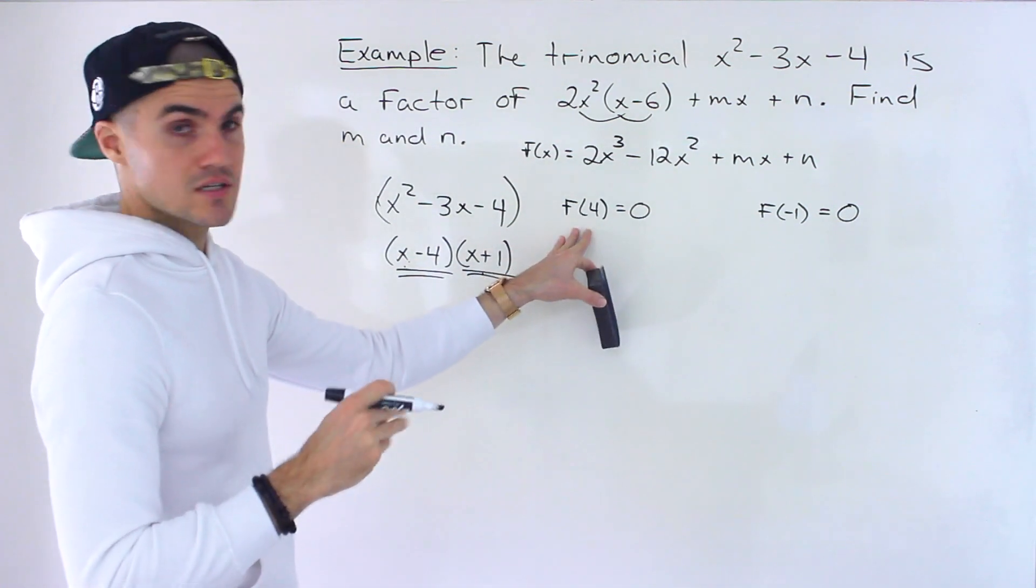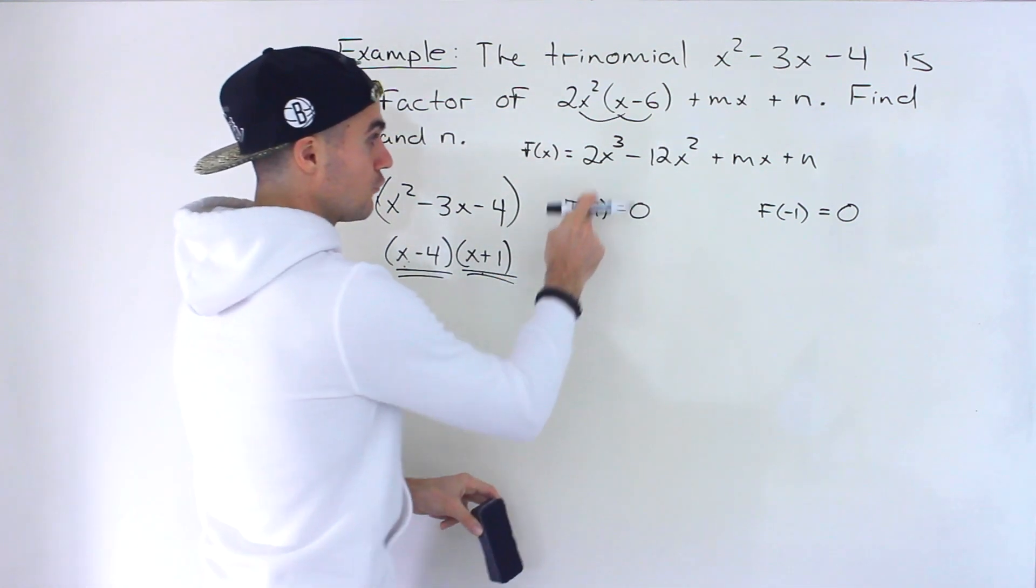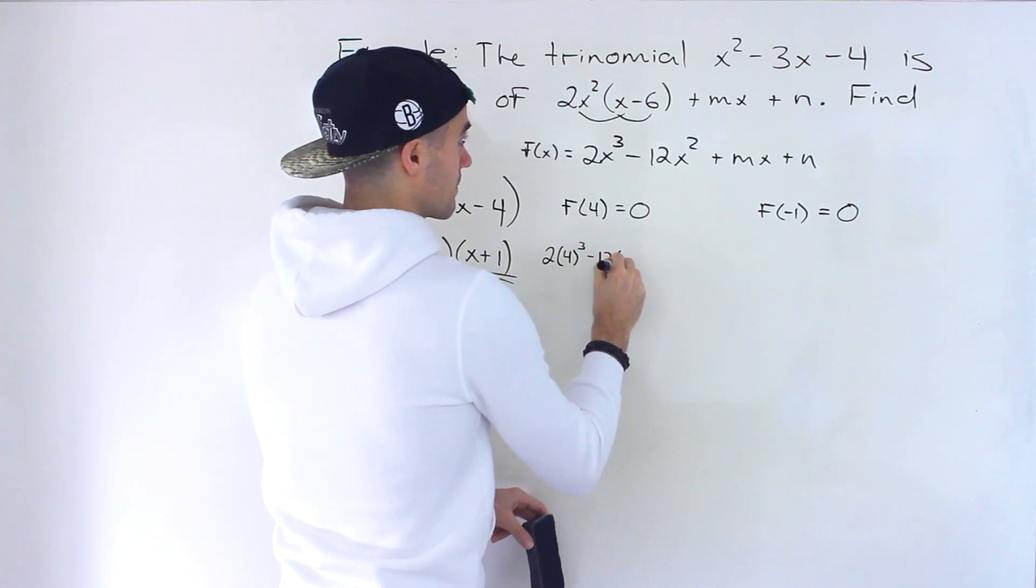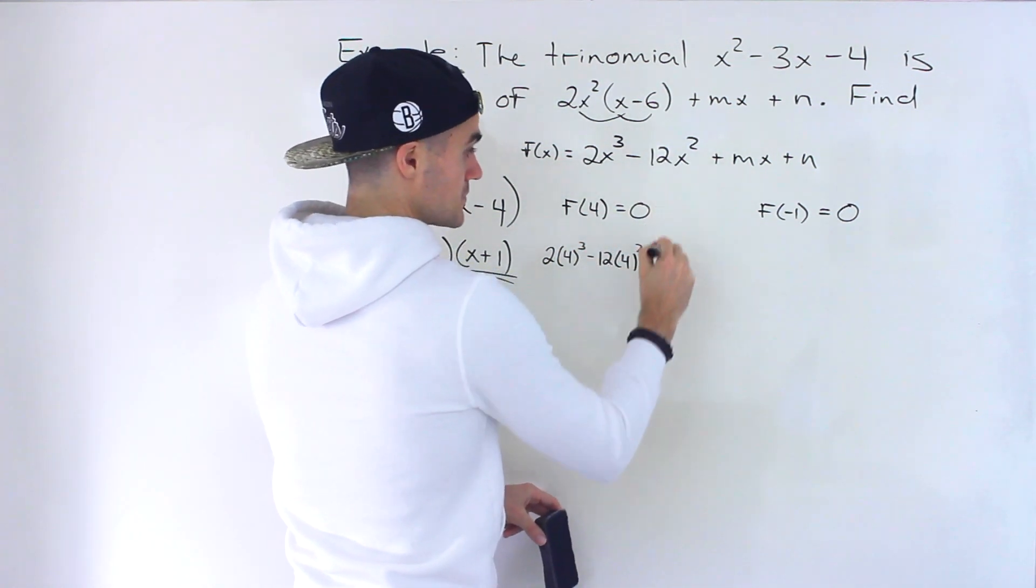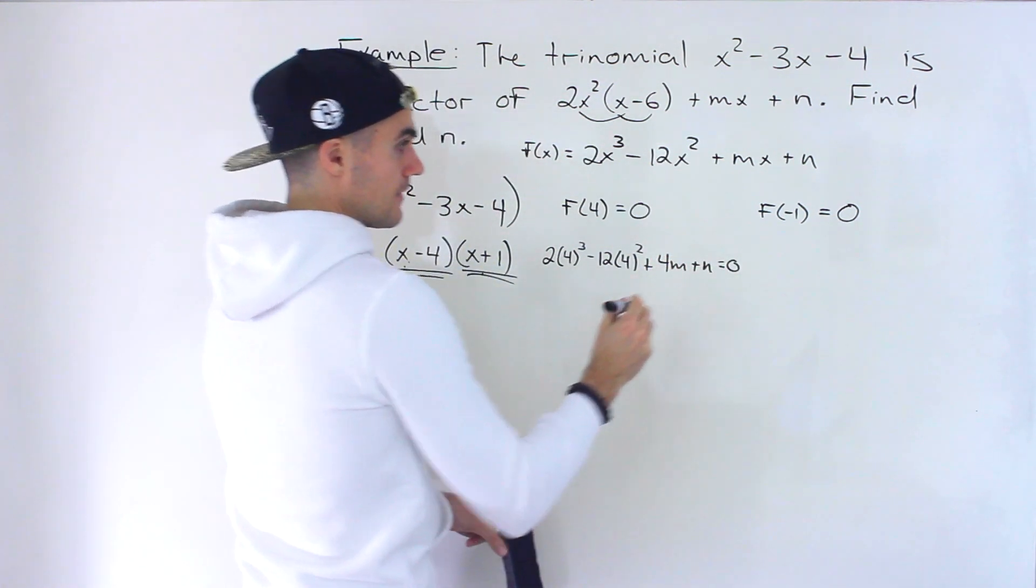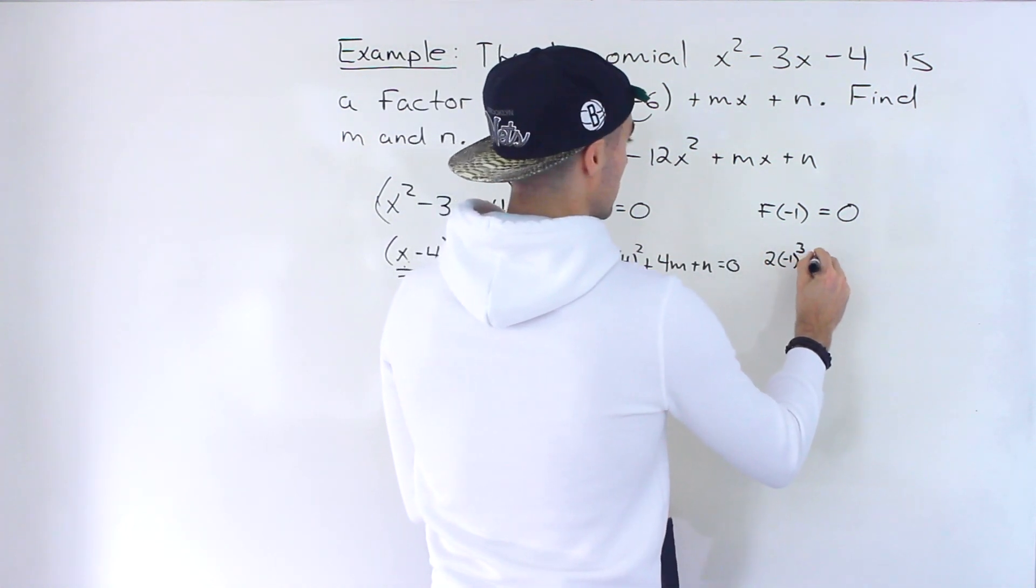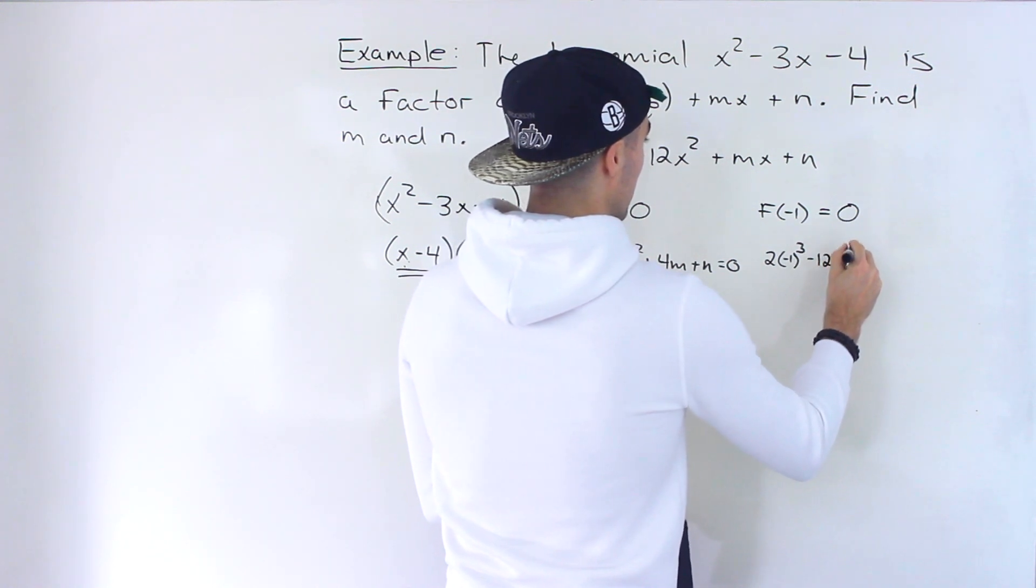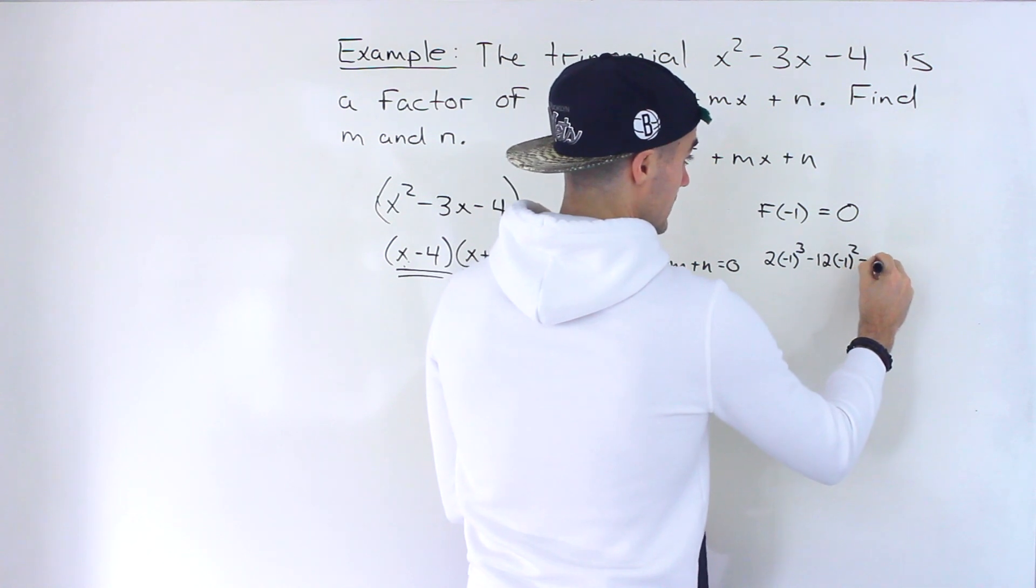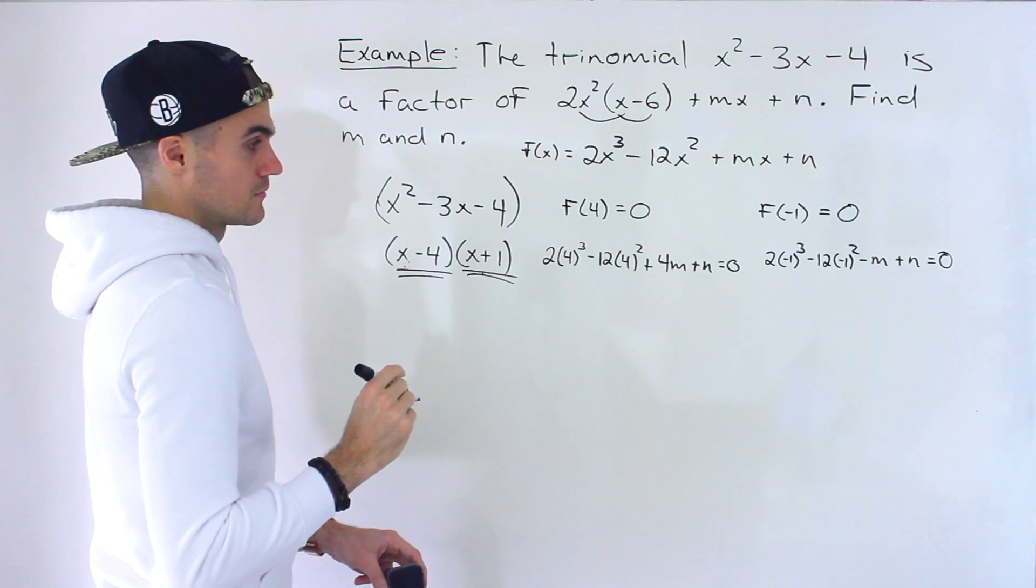And so these two expressions we can create two equations. So we could plug in 4 for all the x values. m times 4 is just 4m plus n equals 0. And then we could plug in negative 1 for all the x values. Negative 1 times m gives us minus m plus n. And then that's going to equal 0.